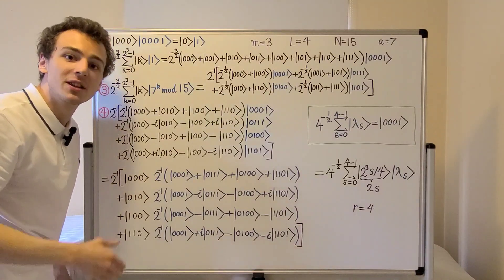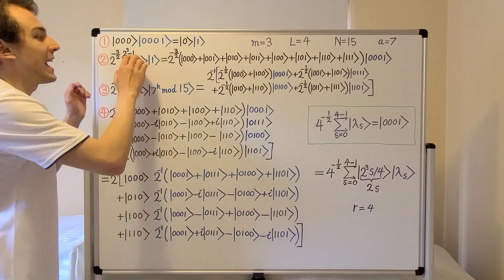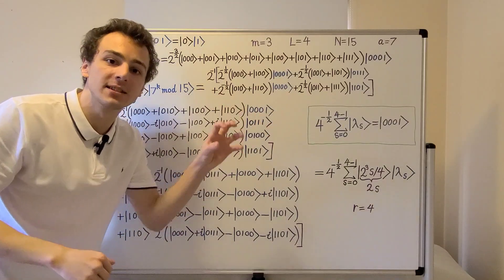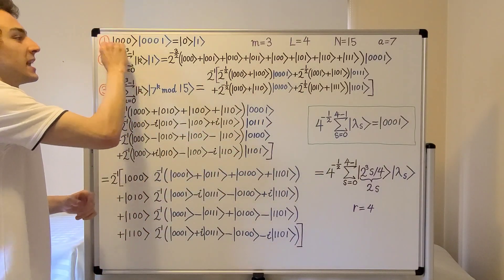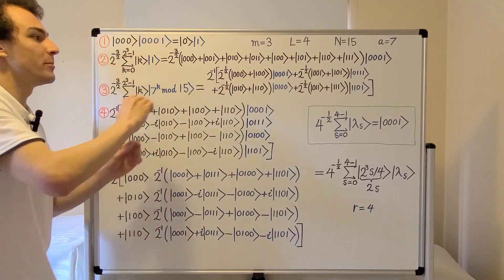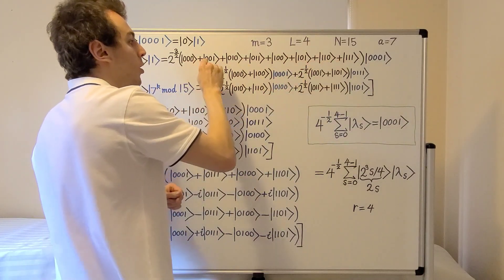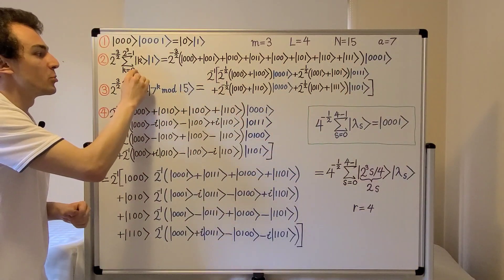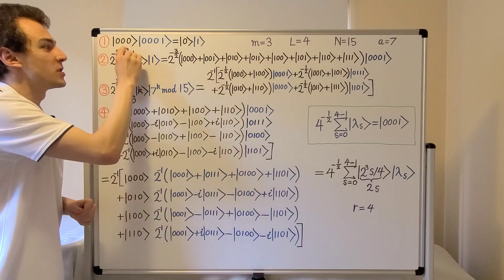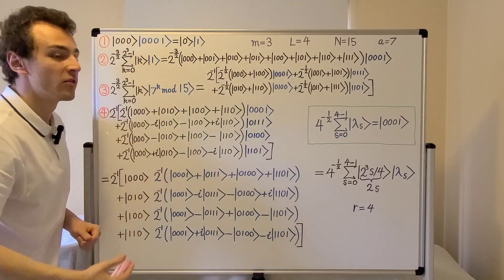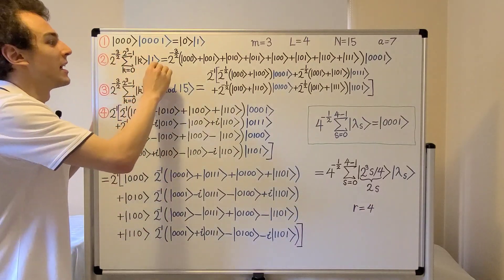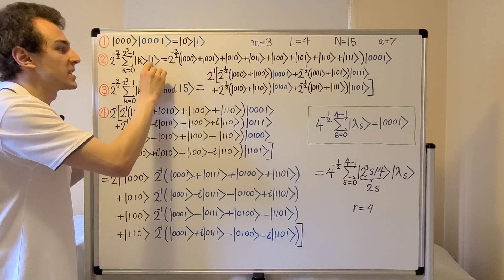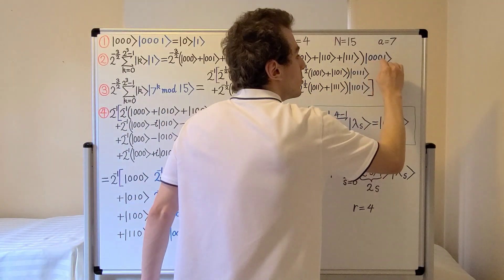Step two is also identical to the previous video. We're creating a superposition of all of the computational basis states in the first register by applying Hadamard gates to all three qubits. That gives us a sum over the values zero, one, two, three, four, five, six, and seven — we start counting from zero, so we go up to one less than eight, which is two to the three. In this step the state of the second register remains unchanged, written as ket one or in full as zero zero zero one.